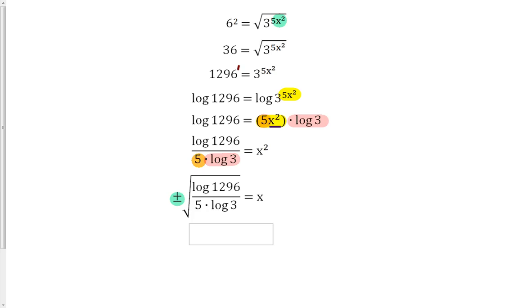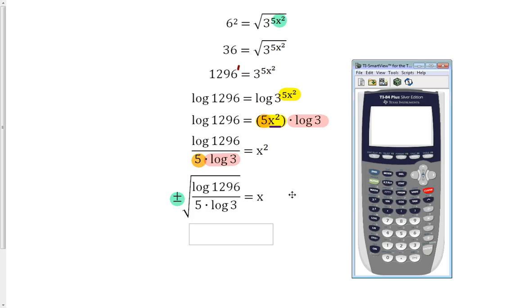To solve that, you use your calculator. And you're going to have the second square root of log 1296 divided by the entire quantity 5 times log of 3. One of the trickiest parts is getting this all typed correctly into your calculator. Evaluate that, and you're going to find x is equal to 1.1423. And always remember your plus or minus, because both of these answers are going to work.